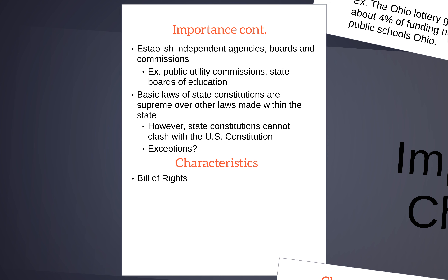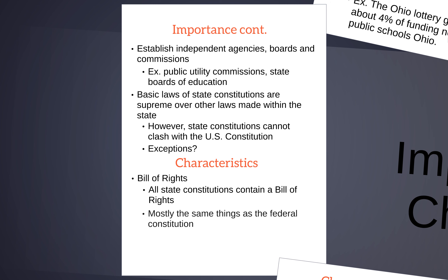So what are some characteristics of Ohio's Constitution? All state constitutions, including Ohio's, contain what's called a Bill of Rights. It functions the very same way as our first 10 amendments of the United States Constitution and includes mostly the same things. You may ask why do it again if the federal government already has these protections. The answer is simple — if the federal government were to change their mind at some point, you could still enforce certain pieces of the state constitution. It's a double protection of those rights, serving as a safeguard.